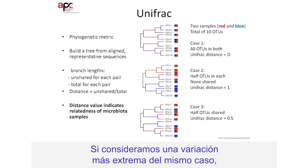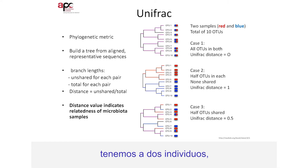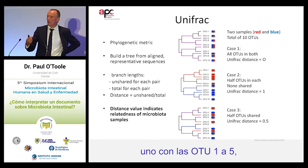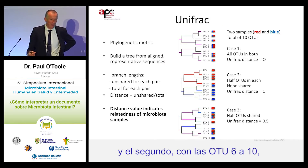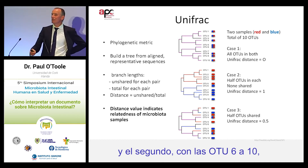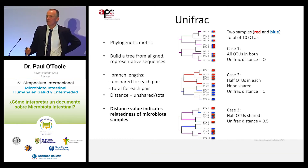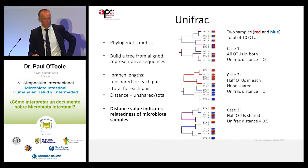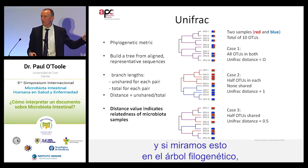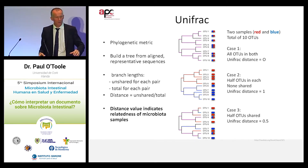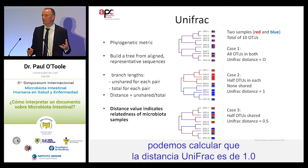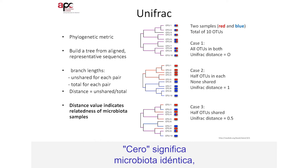If we consider a more extreme variation: we've got two individuals where one person has OTUs one to five and the second person has OTUs six to ten — none of the OTUs are shared. When we look at that on a phylogenetic tree, we can calculate the UniFrac distance and it comes out as 1.0. Zero means totally identical microbiota, and 1 means totally dissimilar.